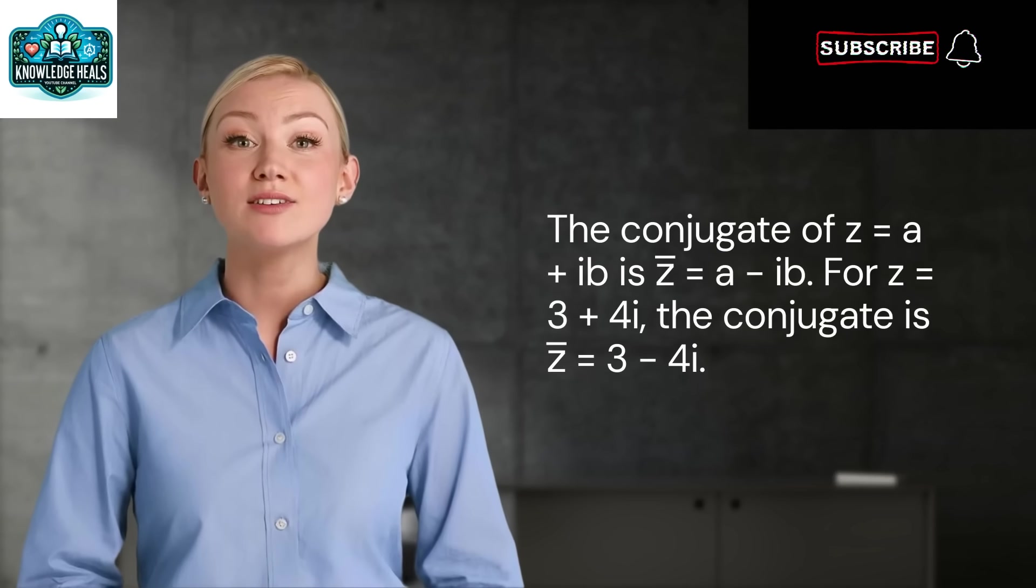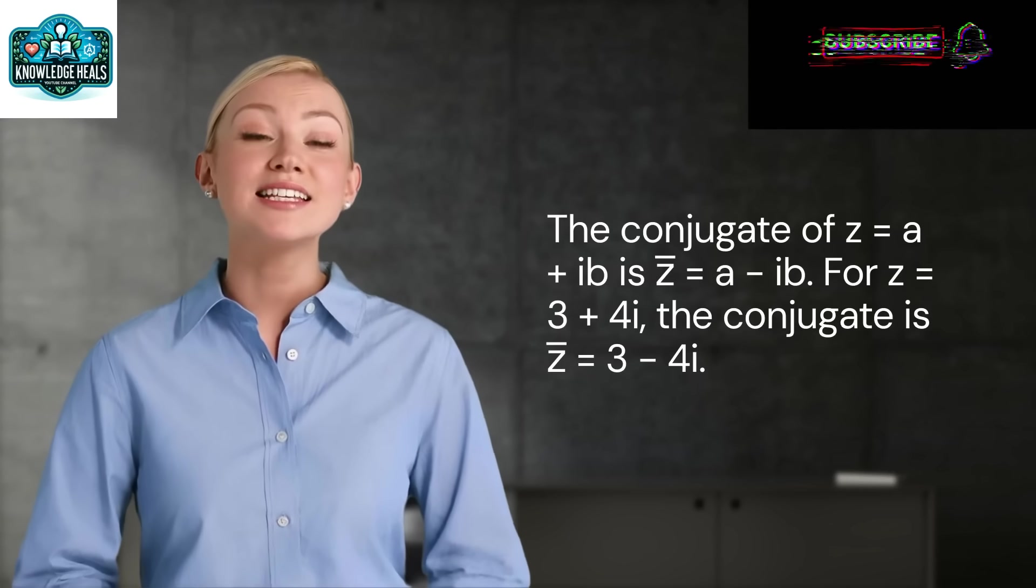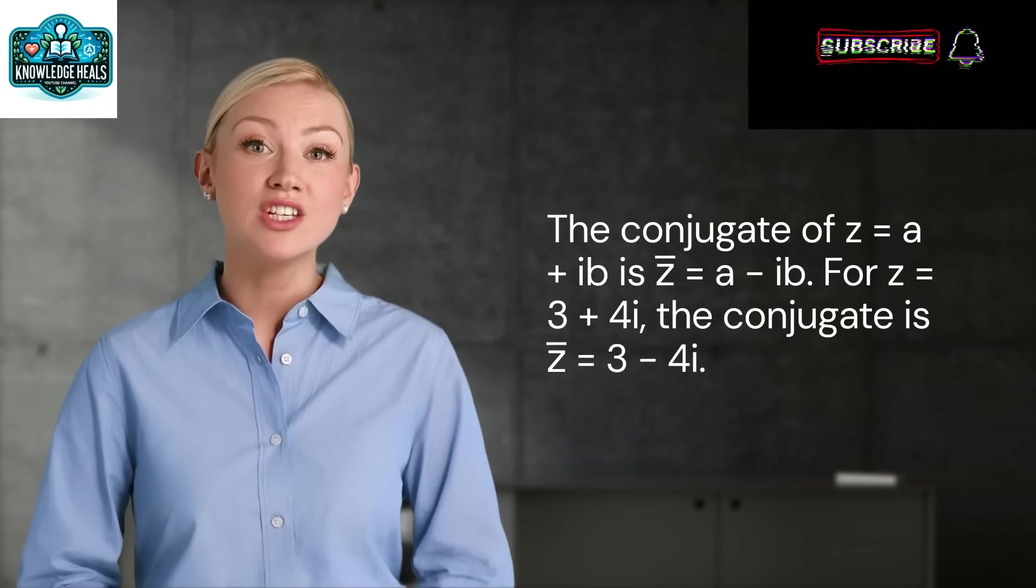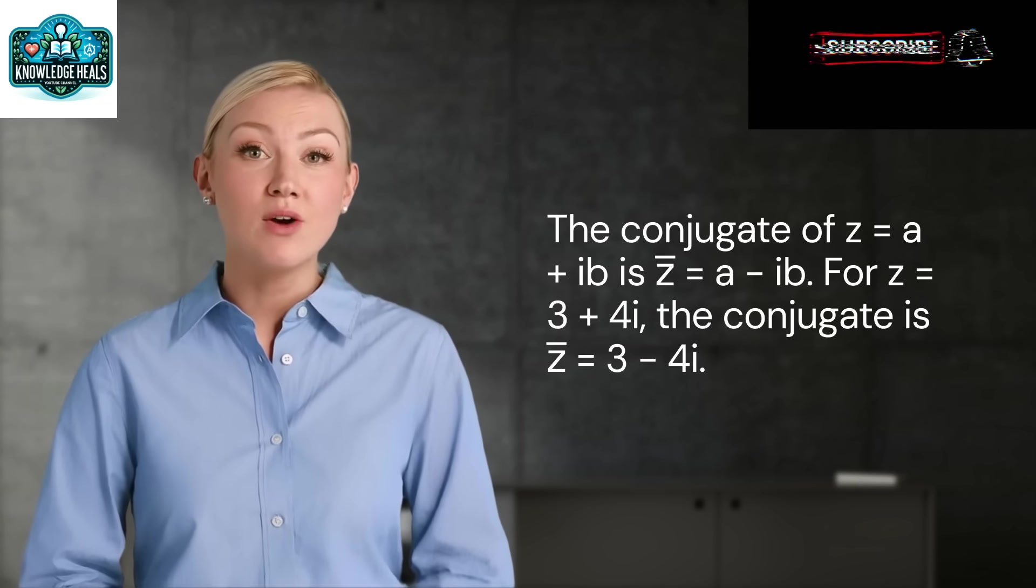The conjugate of Z equal to a plus IB is Z bar equal to a minus IB. For Z equal to 3 plus 4I, the conjugate is Z bar equal to 3 minus 4I.